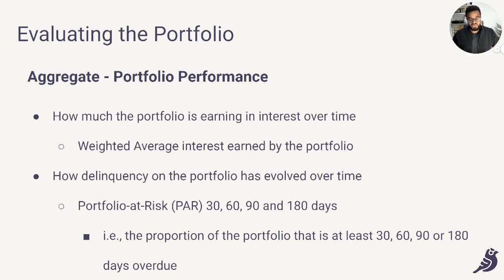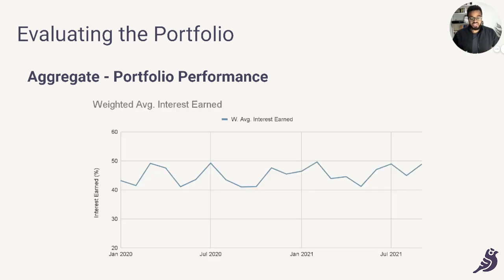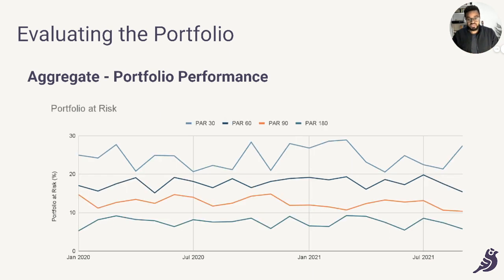The best way to understand this is to rely on data from the company that shows the weighted average interest earned, as well as the portfolio at risk numbers over time. With this data, we typically create charts: the first showing the weighted average interest earned by the entire portfolio over time, and the second showing the portfolio at risk numbers for 30, 60, 90, and 100 days for the entire portfolio over time. From these, we can see how the portfolio has performed. We typically compare these numbers to the company's unit economics to make sure they are aligned and that the company is unit economic positive. We also look to make sure that the performance is generally getting better over time.